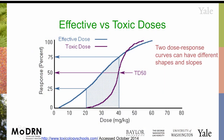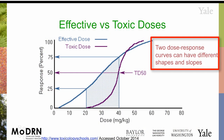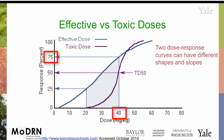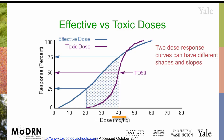Two dose-response curves can have very different shapes and slopes. Here's the effective dose and the toxic dose. At a dose of 20 milligrams per kilogram, 20% of the people are going to be affected, but up at 40 milligrams it's going to be effective for 70%. But the difference here is going to be toxic for almost no one, whereas here it's going to be toxic for half of the people that use it.